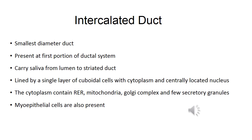The cytoplasm also contains rough endoplasmic reticulum, mitochondria, Golgi complex, and few secretory granules. Myoepithelial cells are also present in the intercalated duct.